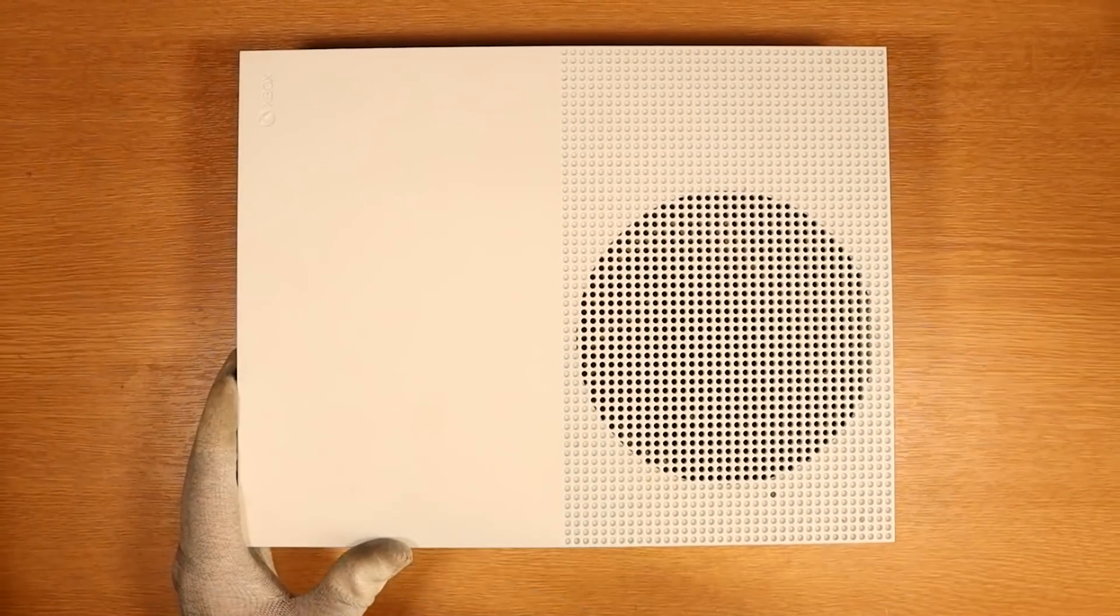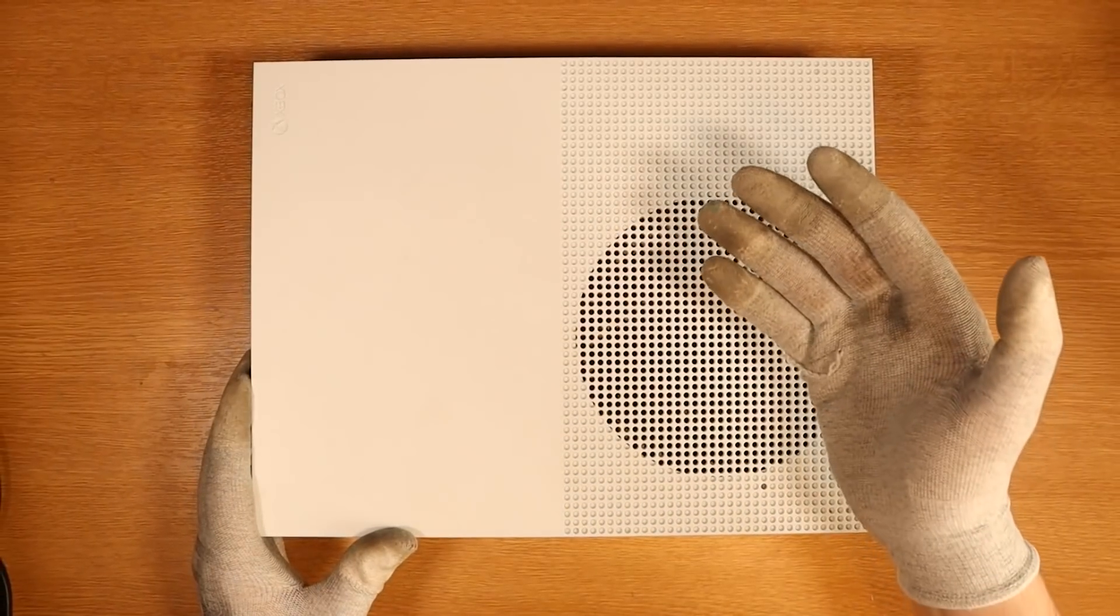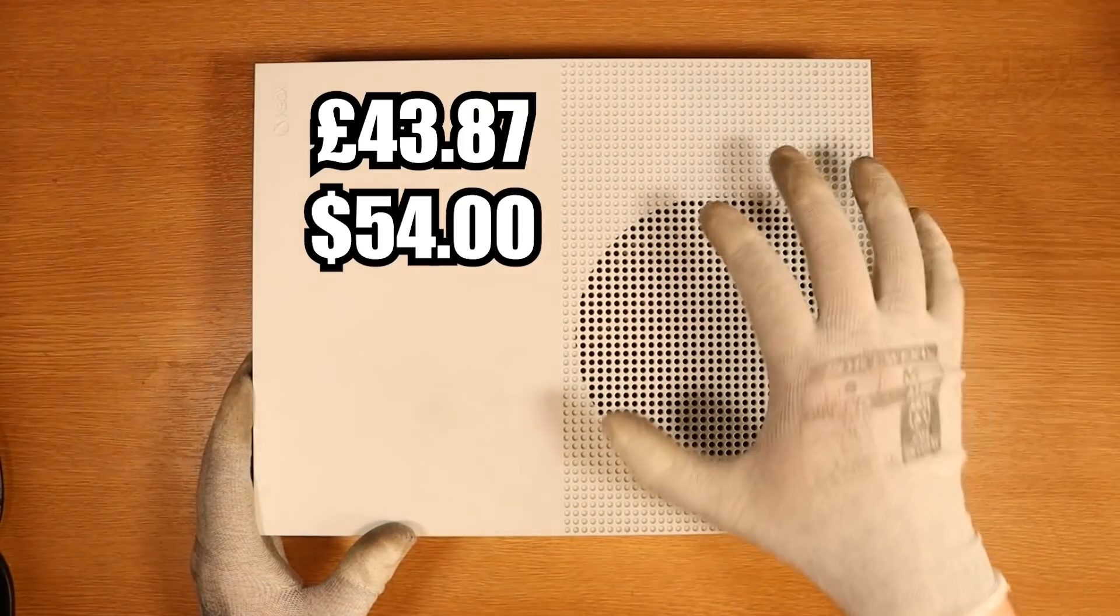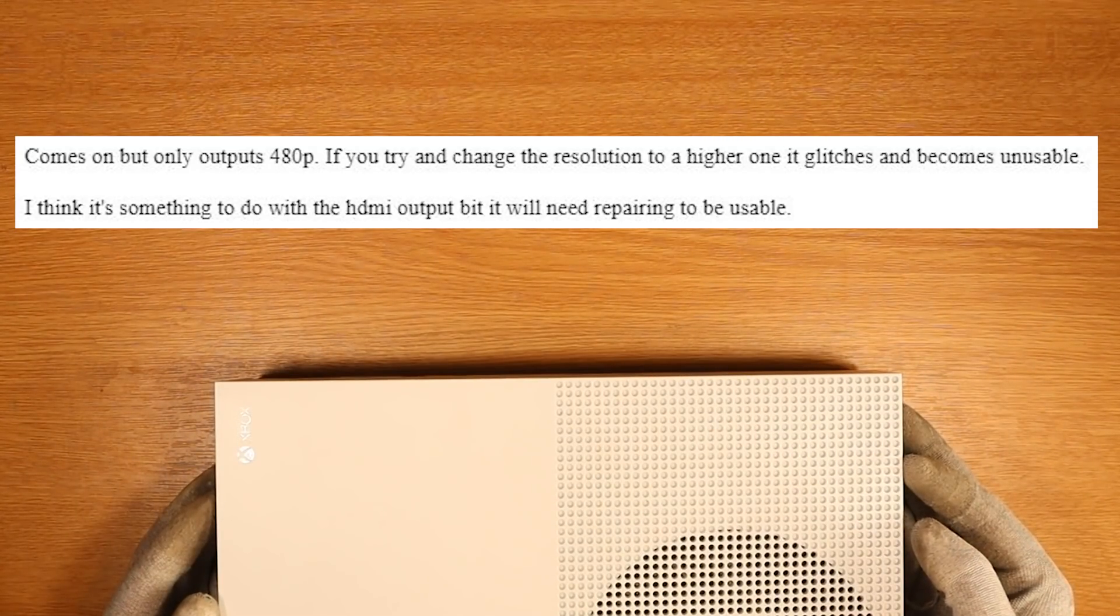Here I have an Xbox One S 1TB Digital Edition. It's faulty and I paid £43.87, which roughly equates to $54. The listing states it comes on but only outputs at 480p.